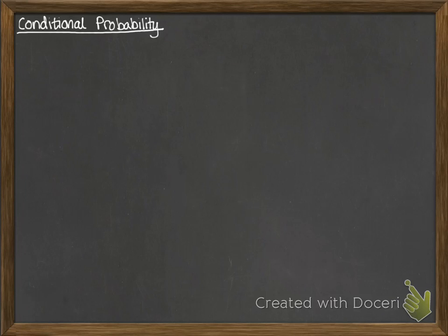Conditional probability has the following notation. We read this as the probability of A given B, with a vertical straight line between them.